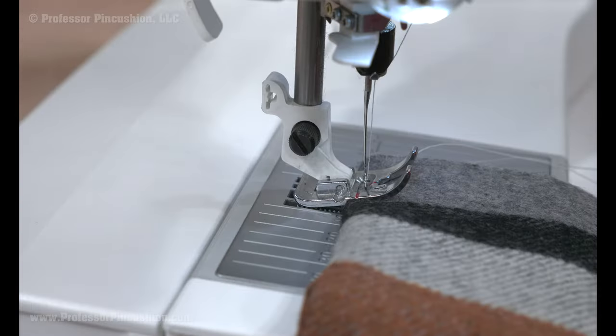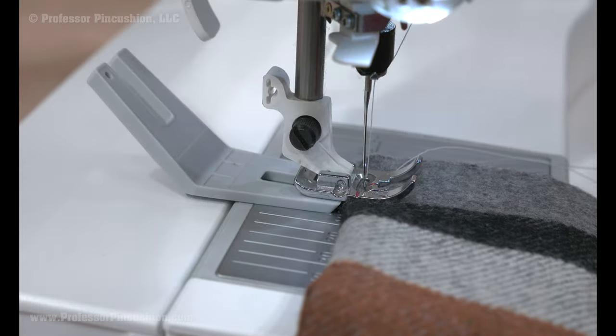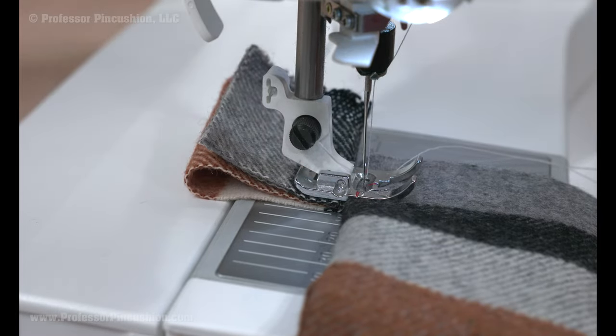For thicker fabric seams, use a hump jumper or folded up fabric. Place it under the presser foot behind the needle and this will even out the foot so the fabric moves through the machine without getting stuck.